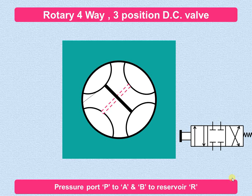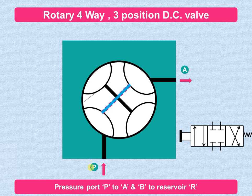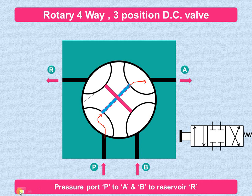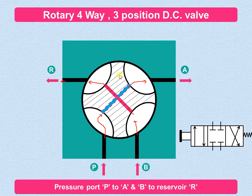Now let us see the operation of the four-way, three-position direction control valve. In this particular case we have used a rotary spool. As you can see, the flow is taking place from port B — it will come over here and through this internal passage it will go to port A. Similarly, from cylinder port B, the flow can go through this particular passage to the reservoir port R. This rotary spool is shown by this H-line and it can be rotated in clockwise or anticlockwise direction. In the left envelope mode, the flow takes place from B to A and also from B to R as indicated.